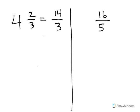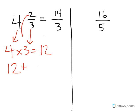When we have 4 and 2 thirds, what we could do is we could take our whole number, 4, multiply it by our denominator, which is 3, to get 12. And then what you can do is you could take that 12 and add in the numerator of 2 to get 14.